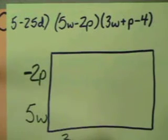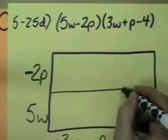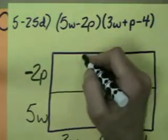And then on this one I have 3W as one term. I have a P, plus P, and a minus 4. I can tell I need two rows. I need three columns.